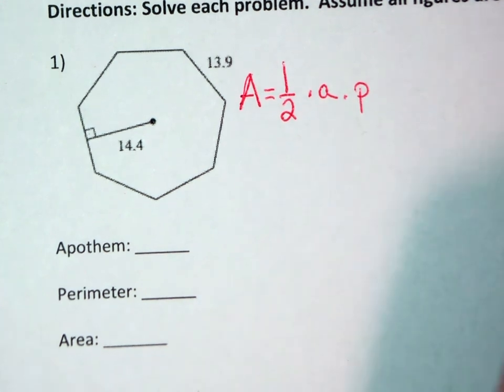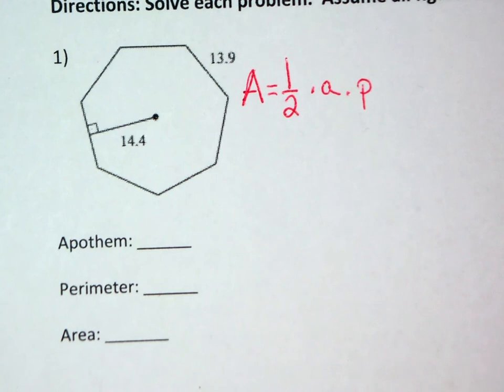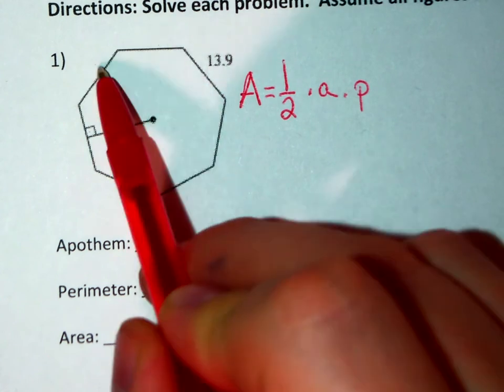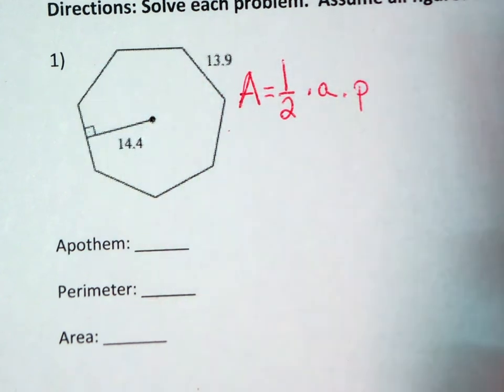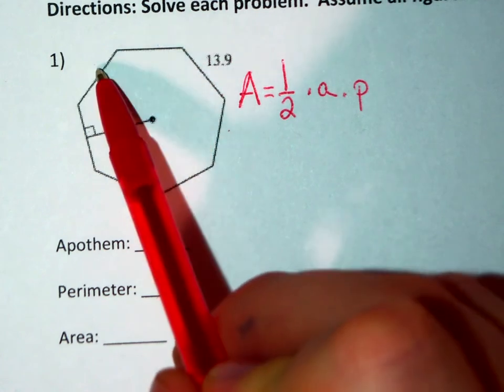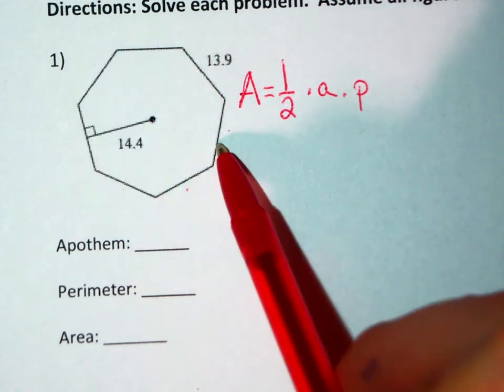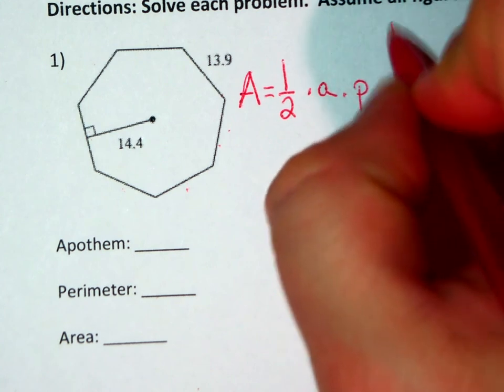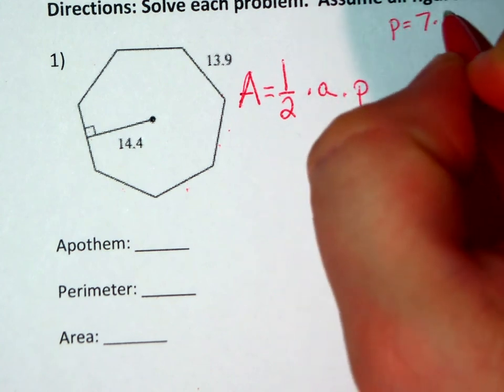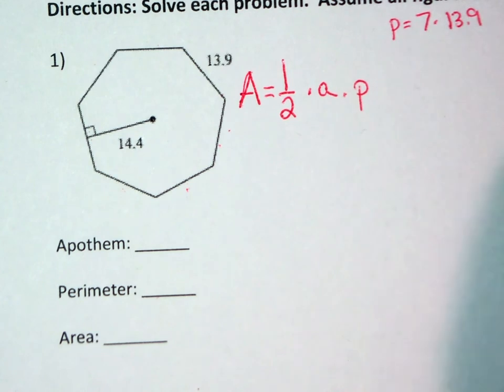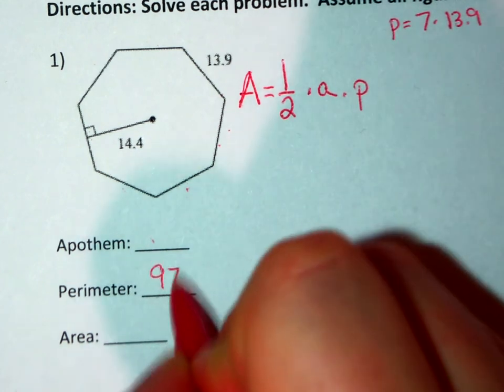We need to calculate the perimeter. Since the perimeter is the side lengths added up all the way around our figure, we simply calculate how many side lengths we have. On this shape, I have 7 side lengths, so my perimeter would equal 7 times 13.9, which is 97.3.